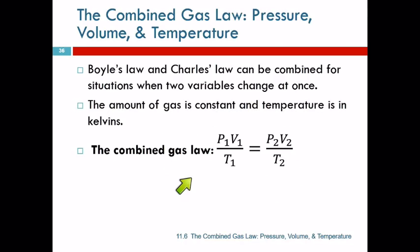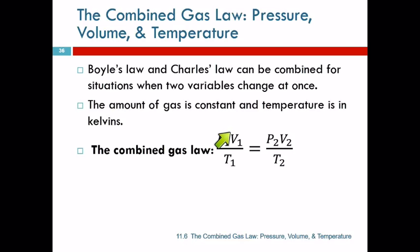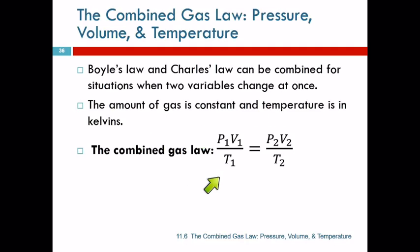If you look at the Combined Gas Law, you'll see that Charles' Law and Boyle's Law are both hidden in there. If I block off the T's, I've got P1V1 equals P2V2 — that's Boyle's Law. And if I don't change the pressures, then I've got V1 over T1 equals V2 over T2 — that's Charles' Law. So the Combined Gas Law assumes the amount of gas is constant, and as always, temperature must be in Kelvins. So: P1V1 over T1 equals P2V2 over T2.